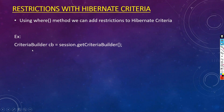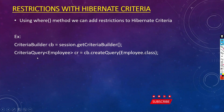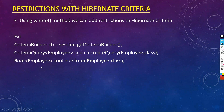First, we have to create the CriteriaBuilder: cb = session.getCriteriaBuilder(). Then create a CriteriaQuery for the entity class Employee: cr = cb.createQuery(Employee.class). Now create the Root: root = cr.from(Employee.class), which connects to the employee_info table mapped with MySQL database.